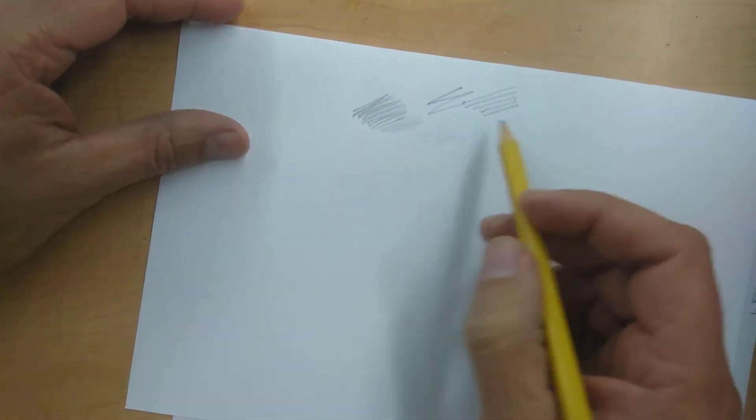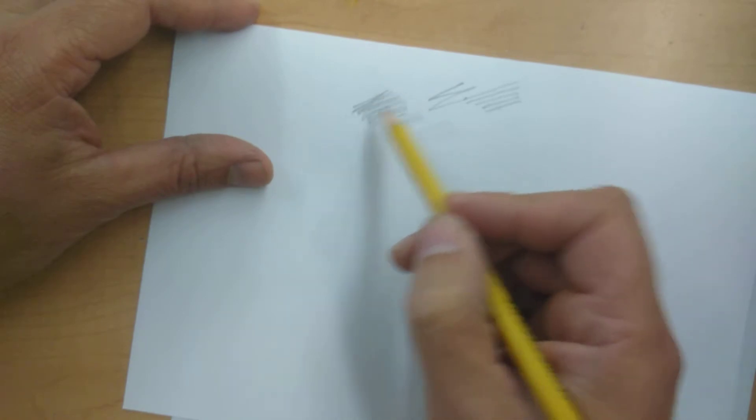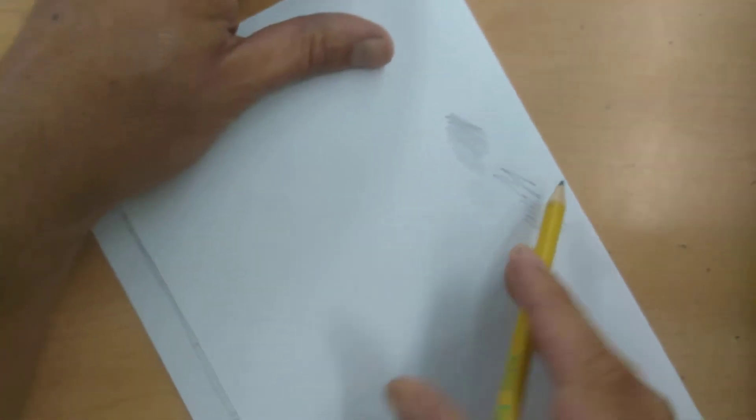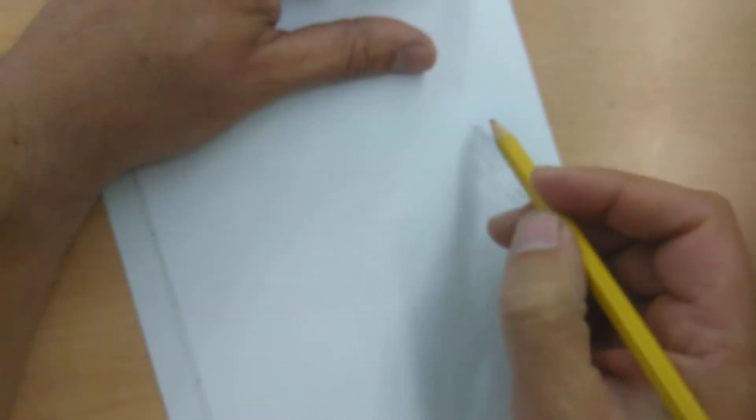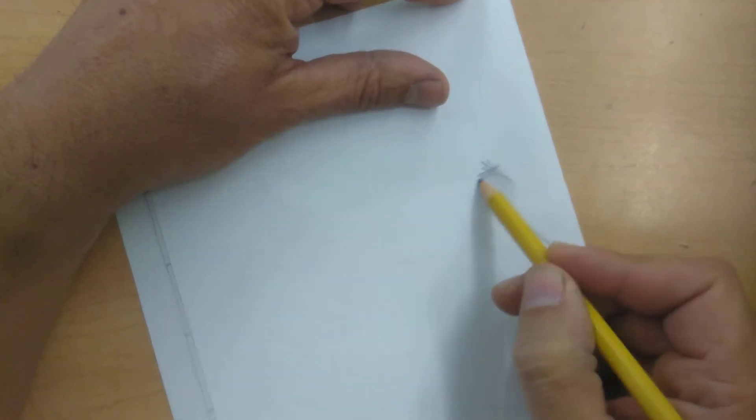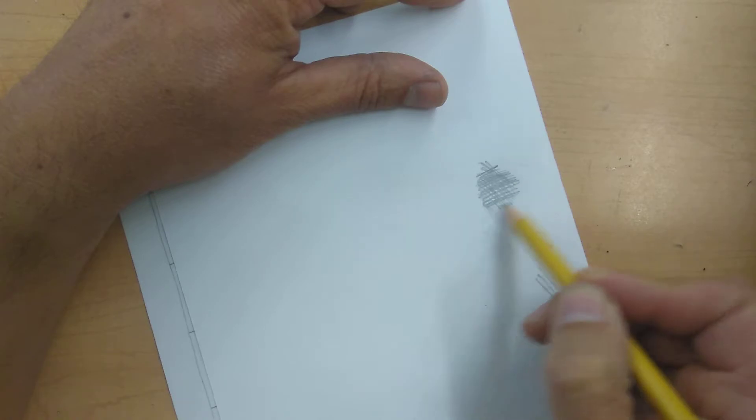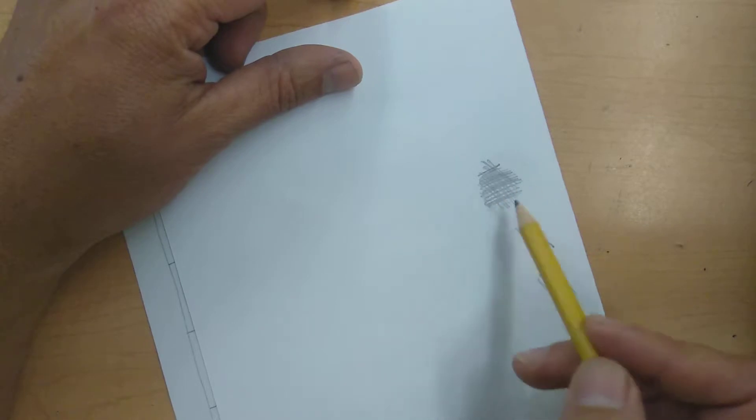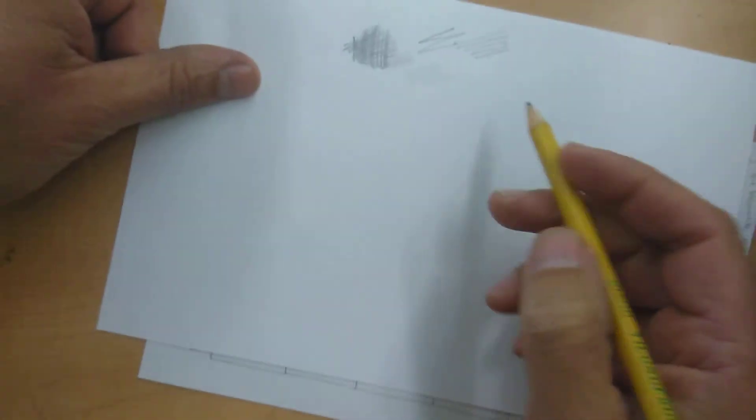So anyways, that's hatching. Cross-hatching is similar. You have your strokes going in one direction. The reason it's called cross-hatching is because you turn your paper or you can turn your wrist and go back over it the opposite direction. And your strokes are crossing over each other.